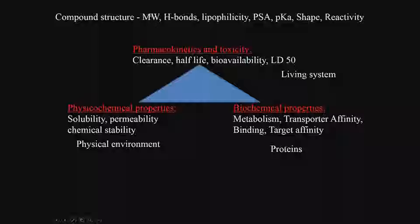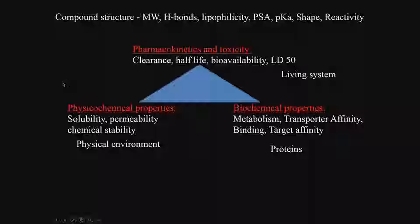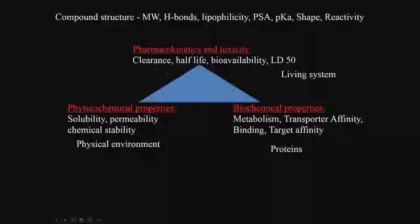As shown in the previous class, we have the compound structure which we can play around with — molecular weight, hydrogen bond donor and acceptor, lipophilicity or hydrophilicity, polar surface area, and pKa, which affects reactivity. Three things are connected: physicochemical properties (solubility, permeability, chemical stability), pharmacokinetics and toxicity (clearance, half-life, bioavailability, lethal dose), and protein-level properties (metabolism, transporter affinity, binding to protein, target affinity). All these are interrelated.